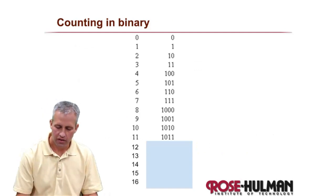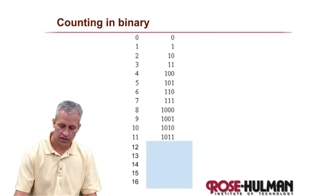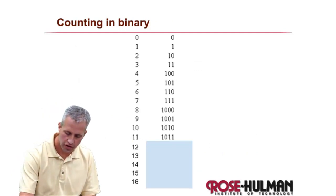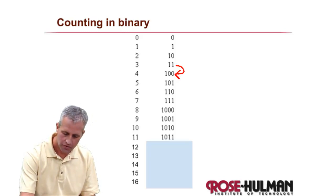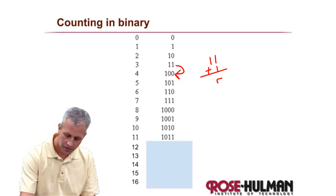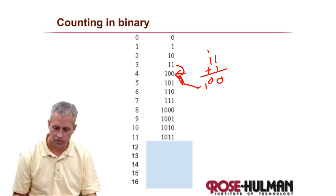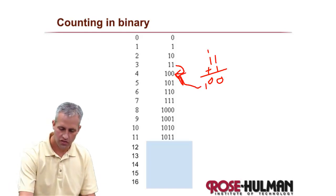Counting in binary is fairly easy — it's really just adding one to the previous number. If you had binary 11 and added one, you'd get a carry, giving you the next number. It just adds one each time.